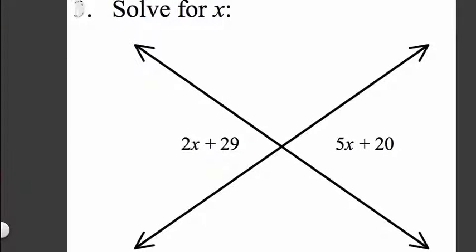Our goal here is to solve for x, and we have two lines that cross each other. One, two here, and that forms these two equal vertical angles.